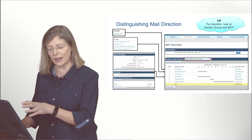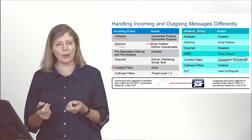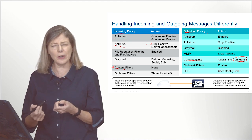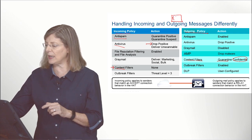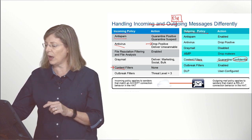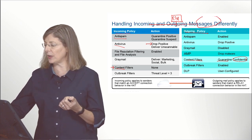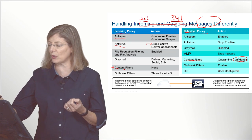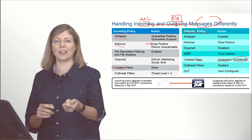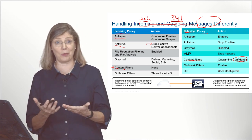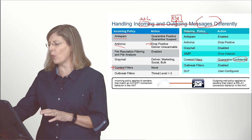How do we distinguish inbound versus outbound messages? I added this slide because students often ask: if my ESA has only one single listener that connects to both the internet and my Exchange server, how do I know if an email is incoming or outgoing? With two listeners it's easier — incoming mail arrives on the public listener and outgoing on the private listener — but with only one listener, how do you know?